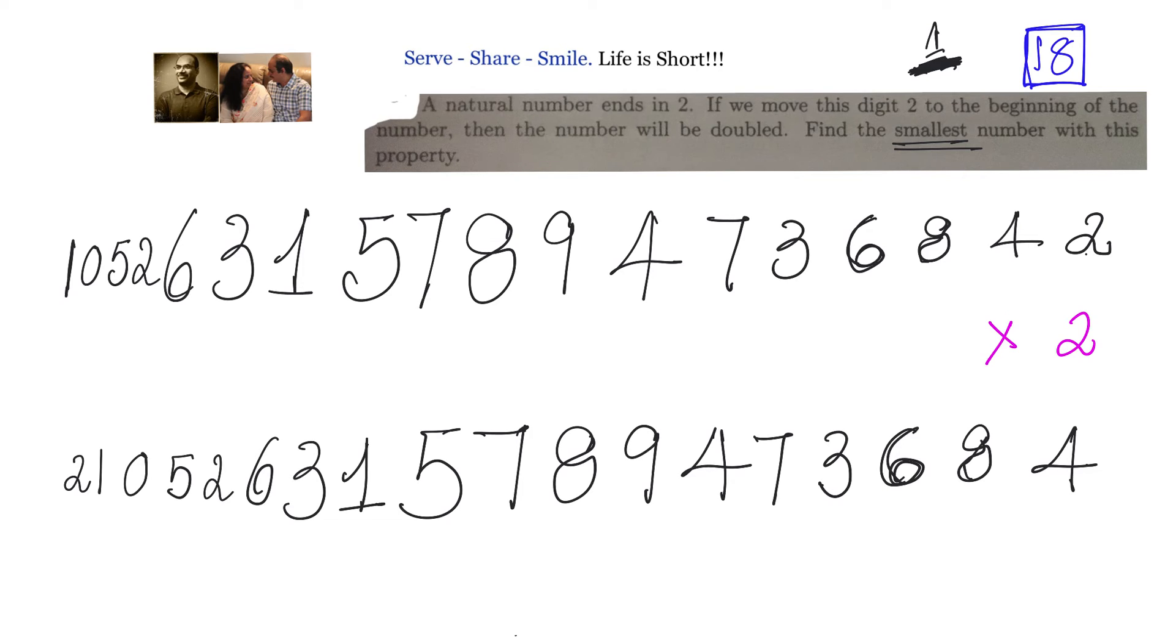Now you can see how funny it is. This is the number: 1 0 5 2 6 3 1 5 7 8 9 4 7 3 6 8 4 2. Now just move this 2 to this side, it will become 2 1 0 5 2 6 3 1 5 7 8 9 4 7 3 6 8 4. So just switching this 2 from here to the leftmost position, the number automatically becomes double. That smallest number is 1 0 5 2 6 3 1 5 7 8 9 4 7 3 6 8 4 2.